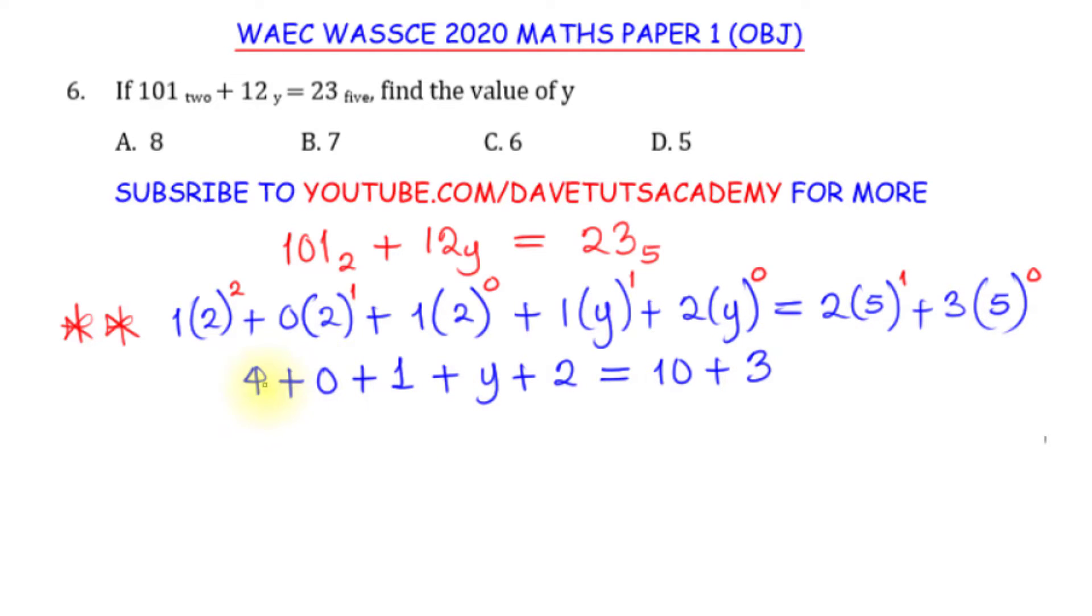So we can say 4 plus 1, that's 5 plus 2, we have 7 plus y equals 10 plus 3, 10 plus 3 is 13. So if we work on that.